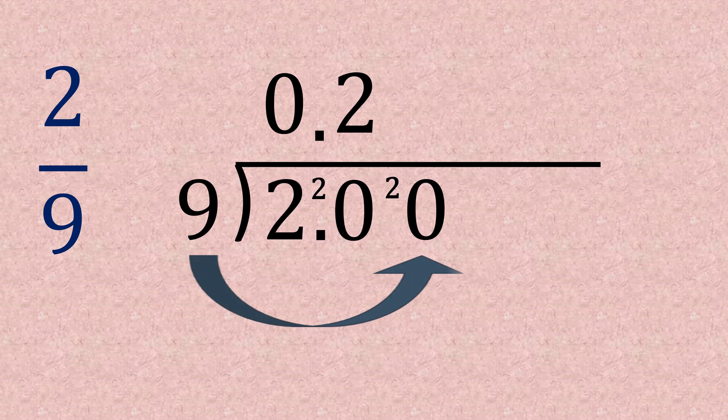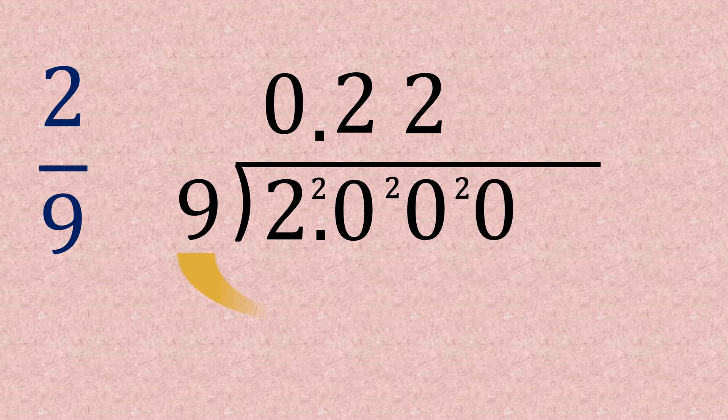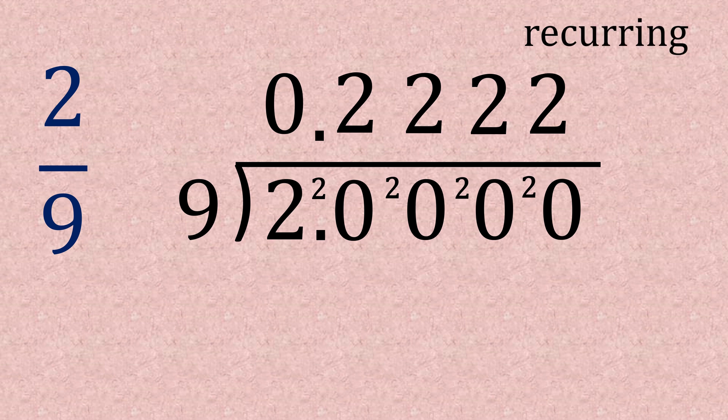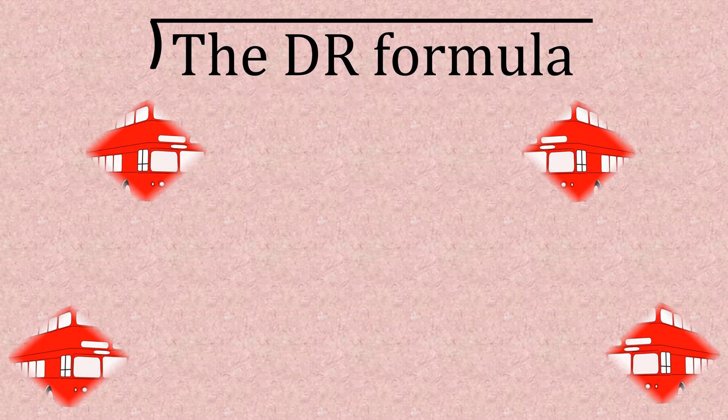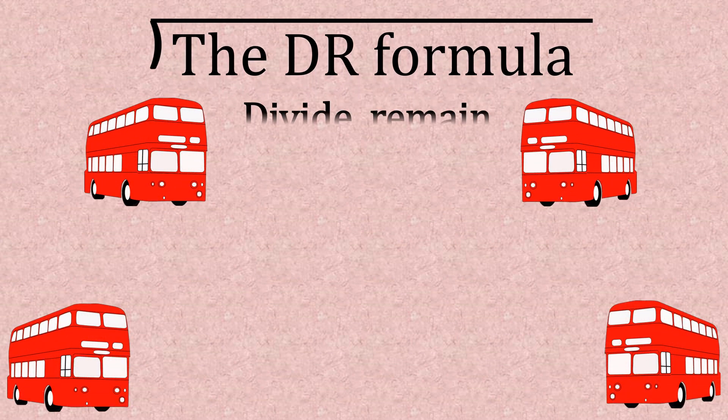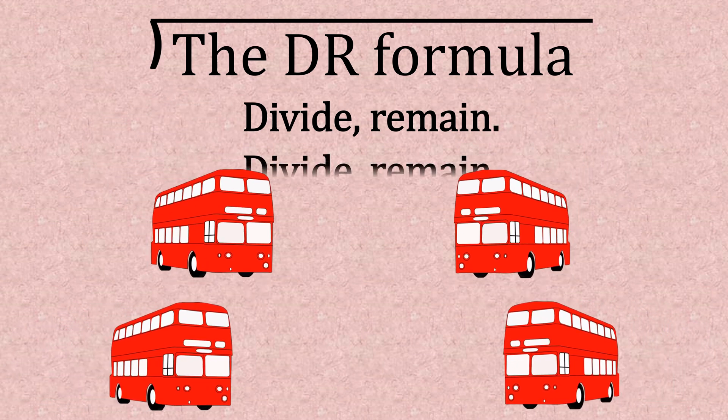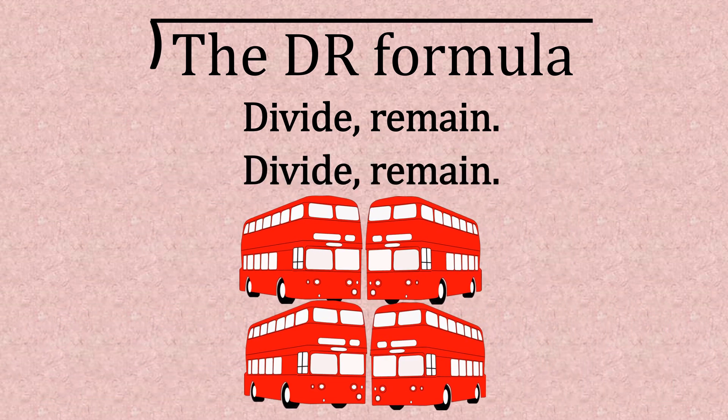So again we're going to add another zero and carry on. 20 divided by nine, it's going to be the same again, two remainder two. So as you can see, we've got another recurring decimal here, so the answer if you'd round it up would be 0.2 recurring, and not forgetting the point above the two. So this is the doctor formula: D-R, D for divide, R for remain. Continue that, divide, remain, divide, remain.